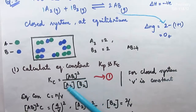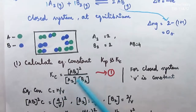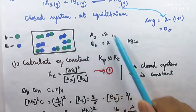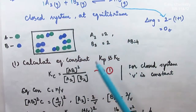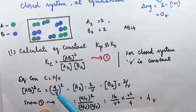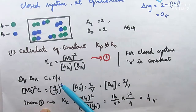Concentration is calculated using the formula C = N/V, where N is the number of moles. V is constant throughout the equilibrium process. So we substitute: concentration of AB is 4/V, raised to the power 2.